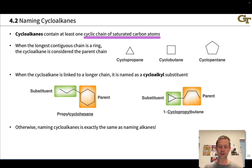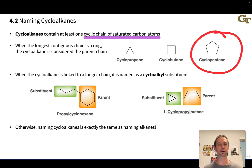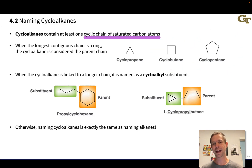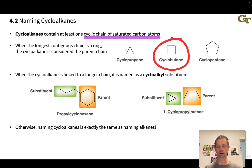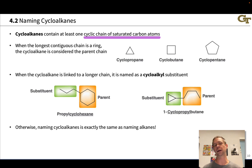For instance, the three-carbon example is cyclopropane, four carbons we have cyclobutane, and five carbons we have cyclopentane. Although these are typically drawn in nice polygon-looking forms, when you get to cyclobutane and larger the molecular shapes in three dimensions don't quite look like this. But we'll cross that bridge when we come to it.